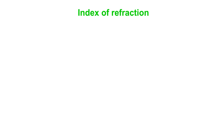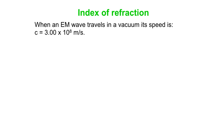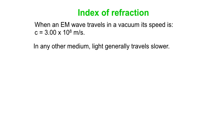What happens is often determined by what we call the index of refraction. When an electromagnetic wave, or an EM wave, travels in a vacuum, its speed is the speed of light — 3 times 10 to the 8 meters per second — what we call C.